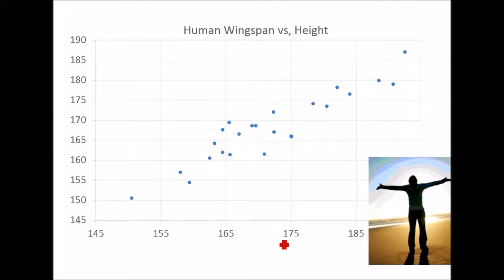In both cases, these measurements were made in centimeters. We can see that although the data is not on a perfect line, it's clear that there is a linear relationship here. The longer one's wingspan is, the taller the person is.